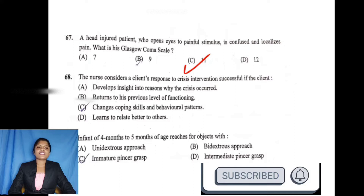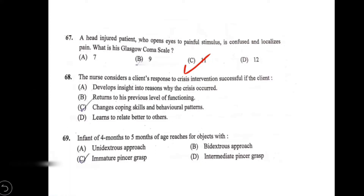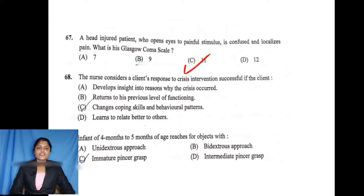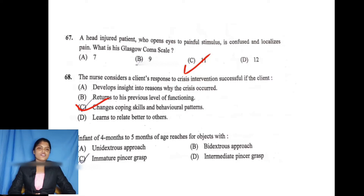The next question is about narcissistic action that develops insight into reasons. Here you have new coping skills and behavioral variant change, then the crisis intervention is successful.